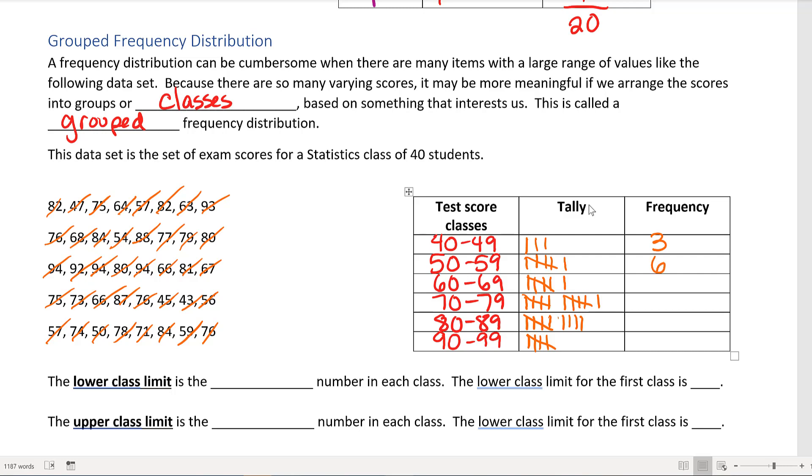Six in the next class, six in the next class, 11, nine, and five. If we add this up we do get 40 values, so that means I didn't miss any.